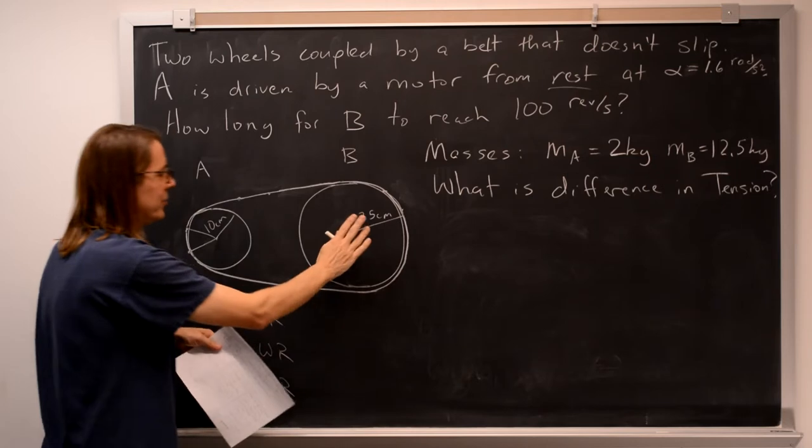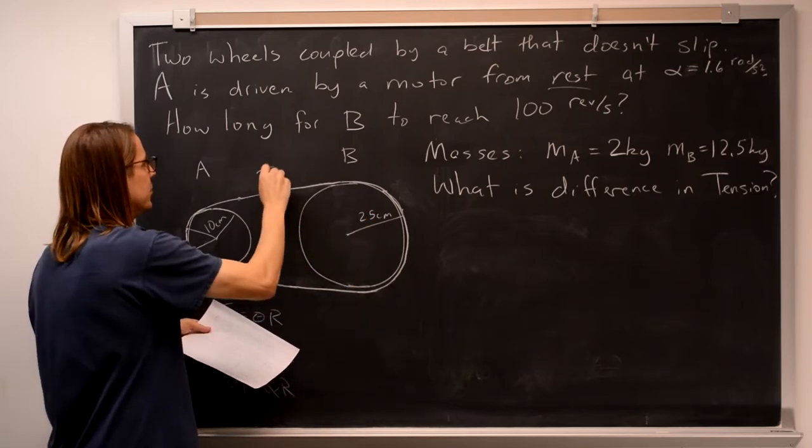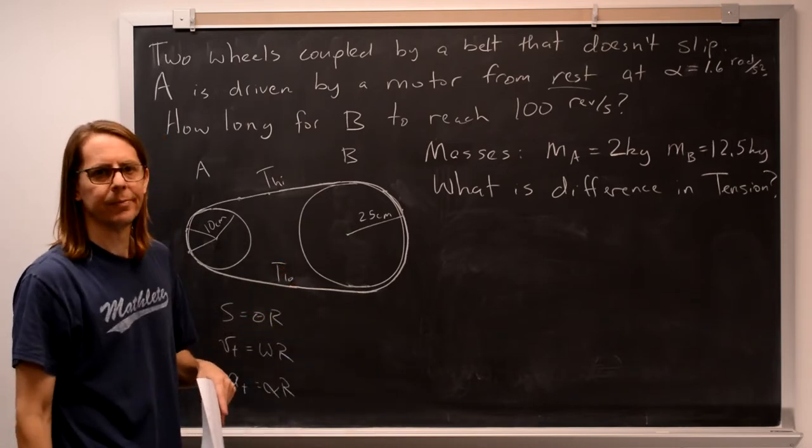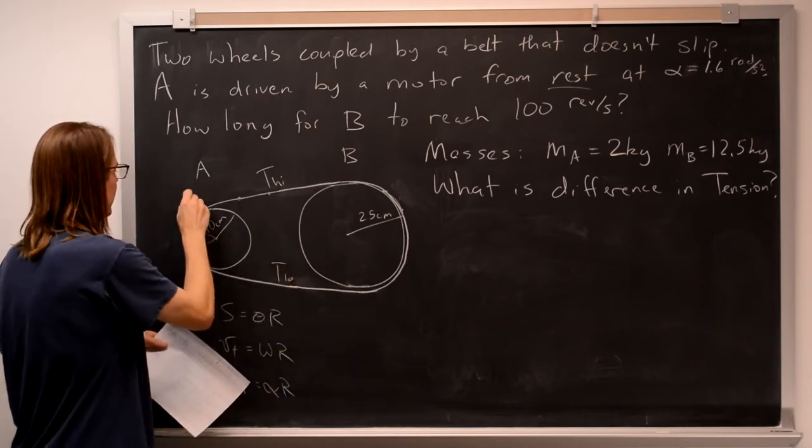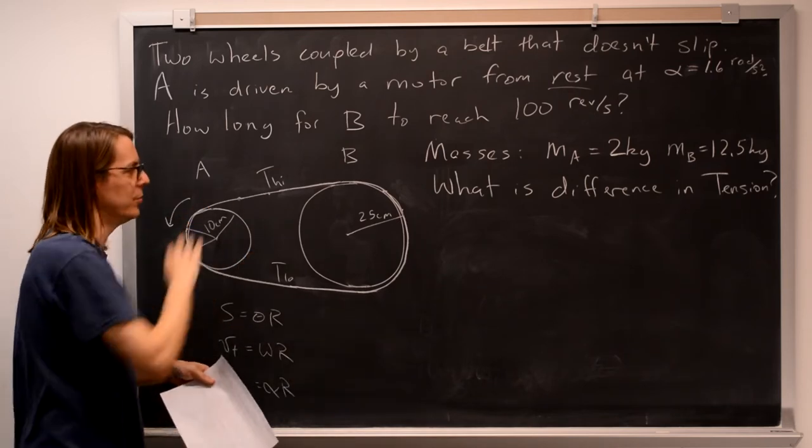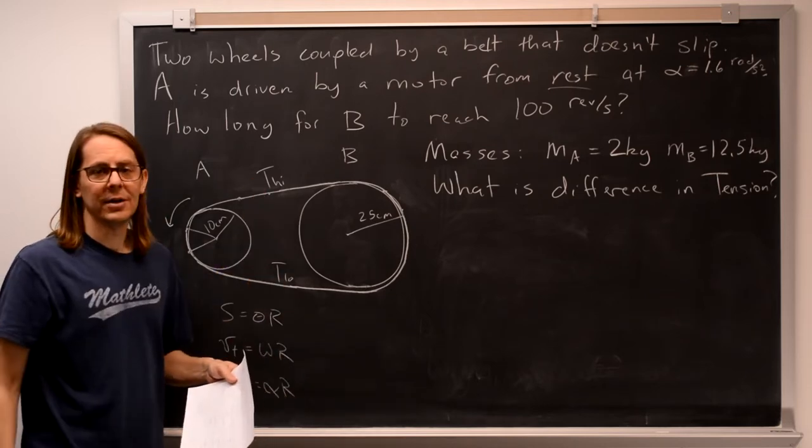This disc has a mass, we're accelerating it, so the tension actually has to be different. So let's write T high over here and T low over here. And just to be clear, let's say it's going around. It's going to accelerate that way. It's speeding up as it goes around that way. So that's what it means. What's the difference T high minus T low?